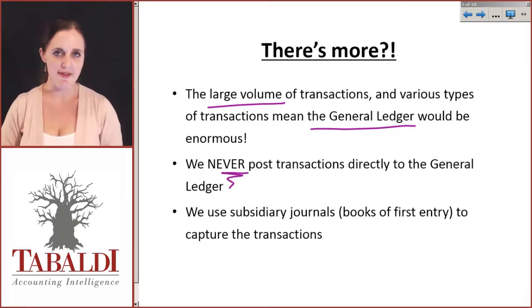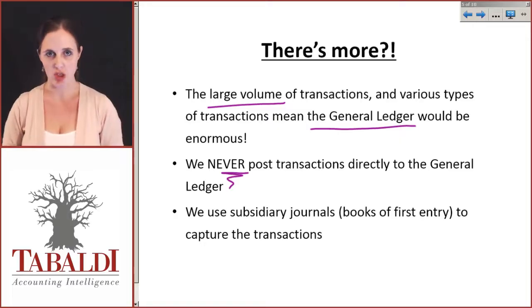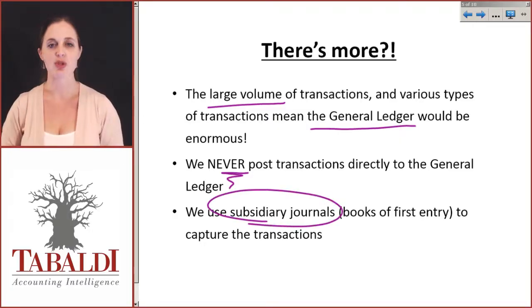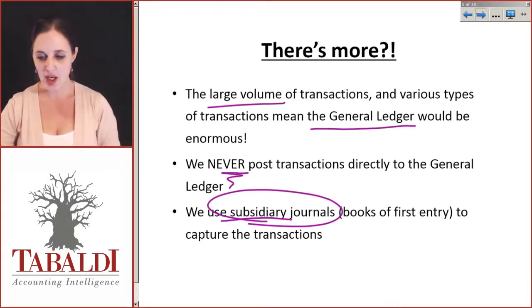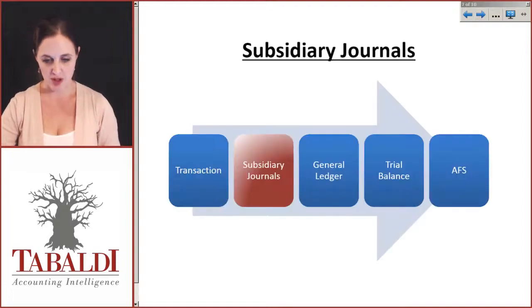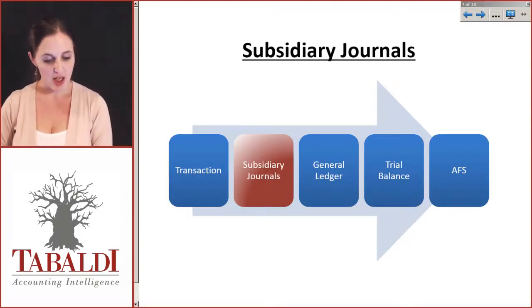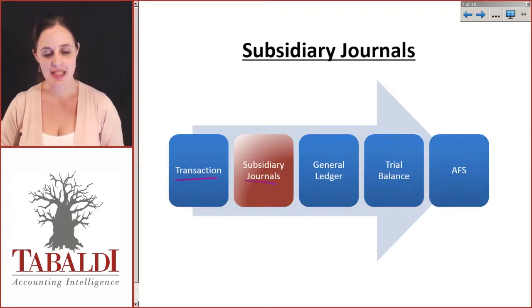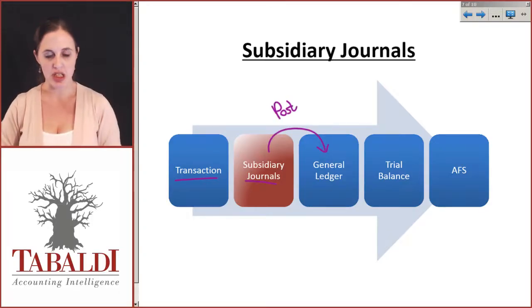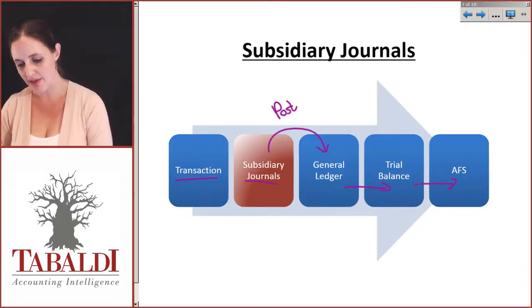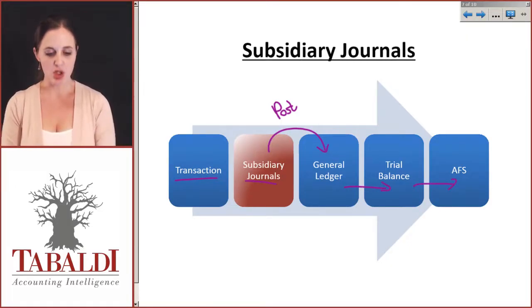So as accountants, we never post transactions directly to the general ledger. Instead, we use subsidiary journals — also called books of first entry or books of initial entry. Our financial reporting process now looks like this: a transaction takes place, we record it in a subsidiary journal, and from the subsidiary journal we post to the general ledger. We then create the trial balance and compile the financial statements. So our subsidiary journals sit neatly between our transactions and our general ledger.